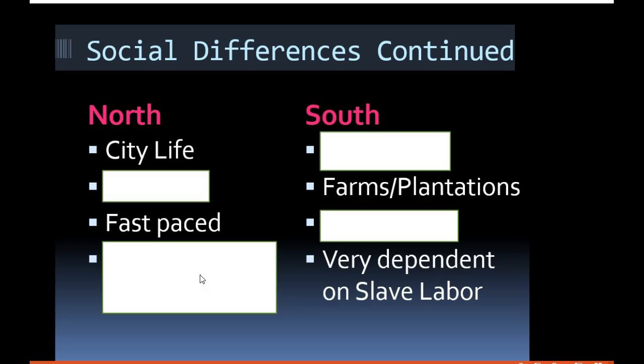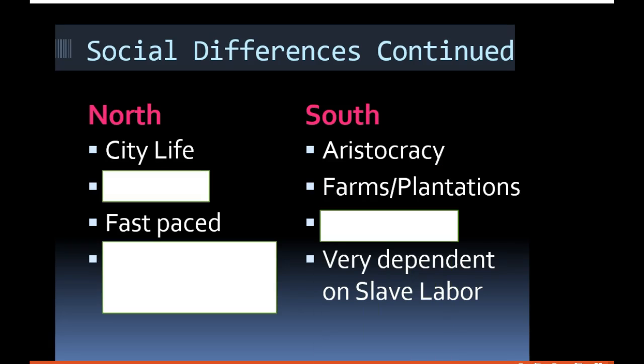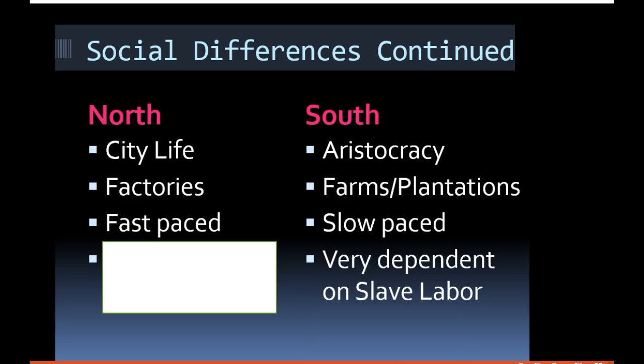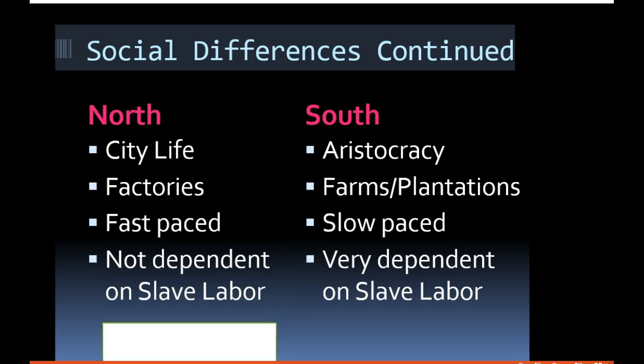There were also big social differences between the North and the South. In the North, many more people lived in cities. In the South, it was much more of a country life — this concept of the aristocracy, people caring about their status, a very laid-back lifestyle. In the North there were factories; in the South there were farms and plantations. The North was fast-paced; the South was laid-back and slow-paced.